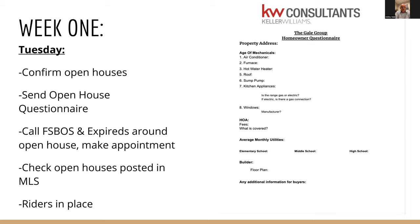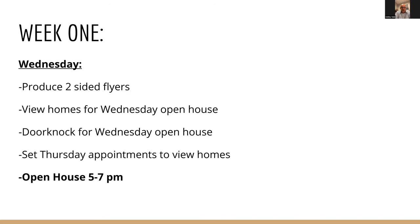Check that the open house is posted in the MLS and make sure the riders are in place. On Wednesday, you produce a two-sided flyer, view homes if you're doing a Wednesday open house, and door knock in the area. Door knocking is a little old school but you've got to be out there talking to people and telling your story. On Wednesday you also set Thursday appointments to view actives in the same subdivision or school area, and FSBOs and expireds. I strongly suggest during summer you do open houses from five to seven, and in winter from four to six.